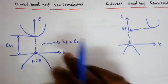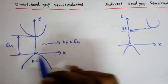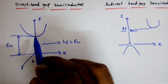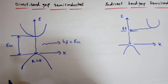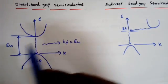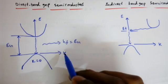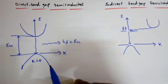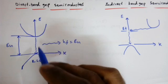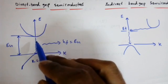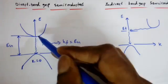To understand direct and indirect bandgap semiconductors: this is the conduction band and this is the valence band. The minimum energy level of the conduction band and the maximum energy level of the valence band — in direct bandgap semiconductors, both occur at the same propagation constant k. As you can see, at k equal to 0, both are at the same point, so there is no momentum required for the electron to fall from the conduction band to the valence band.